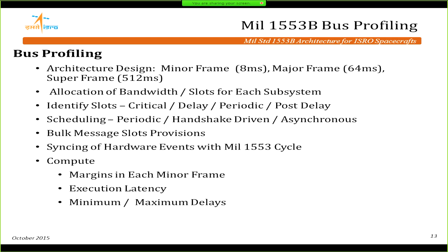Starting with the 1553 bus requires profiling — determining which slot is used for what purpose. We decided on minor frames and major frames, allocating bandwidth for each system. Gyros might require every 8 or 32 milliseconds. We identify data as time-critical, delayed, or post-delay, and scheduling as AOCS-driven or asynchronously requested. Slots are reserved for bulk messages, and hardware events are synced with the 1553 bus cycle.